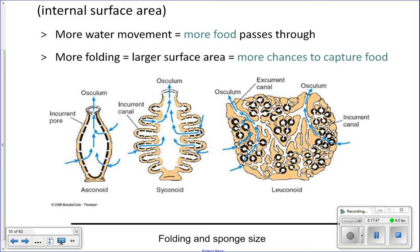For folding — the higher the amount of folding in a sponge's body, the more chances it has to capture food. Think of it this way: if I wore a vest with $100 bills and ran through two lines of people, would you rather I ran through straight lines or curvy lines where I have to stop and pivot? The curvy lines give you more opportunities to grab the bills. Same idea with the sponge — more folding means more chances to capture food and the larger they can be.